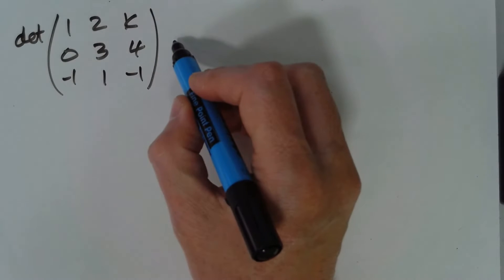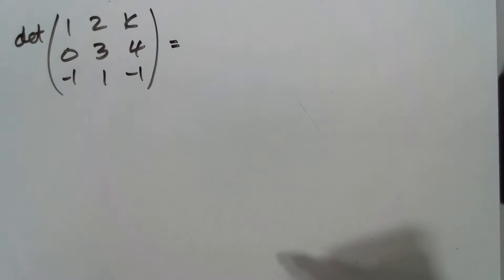So we've got a piece of algebra in this one here, we've got a k, so we are going to have to do this determinant manually.